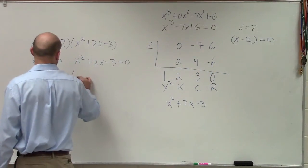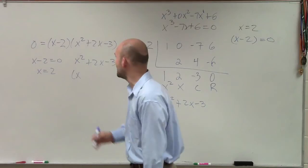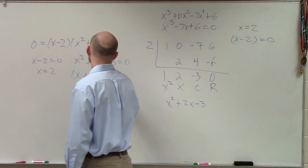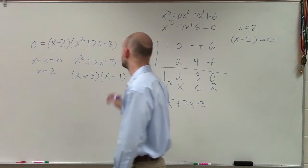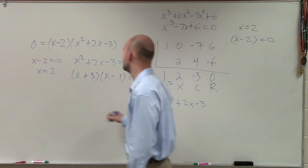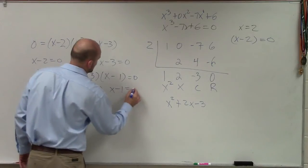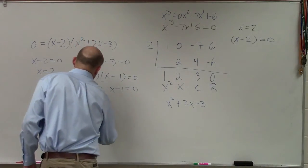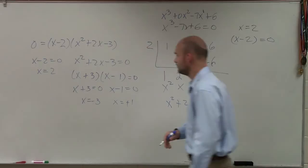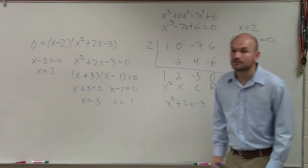So if I factor this out, I have x plus 3 times x minus 1 equals 0. Therefore, now I can apply the zero product property again, and I have x equals negative 3 and x equals positive 1.